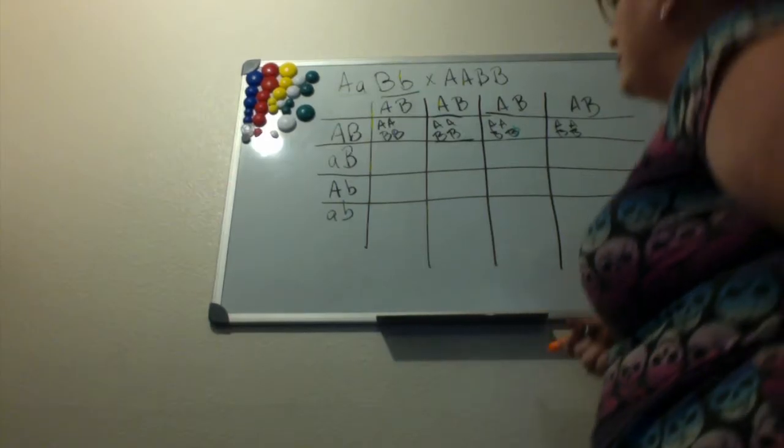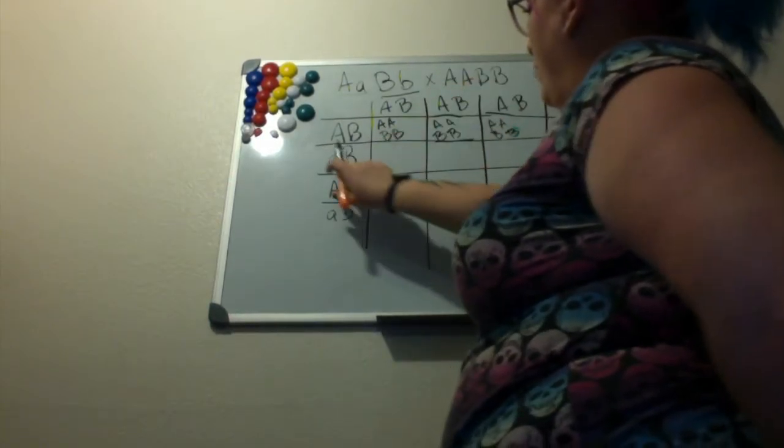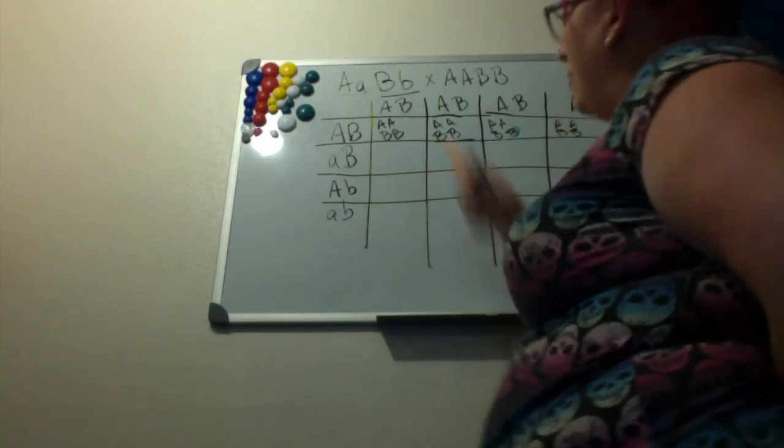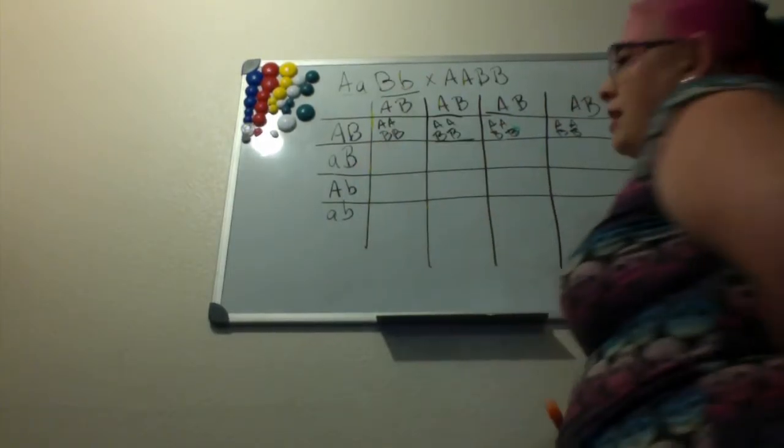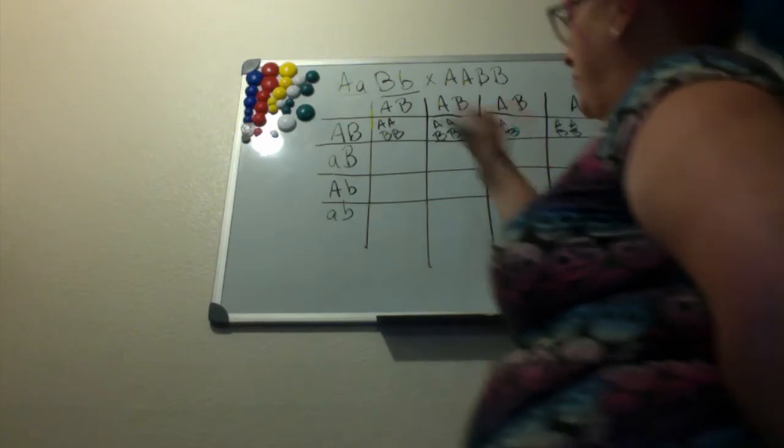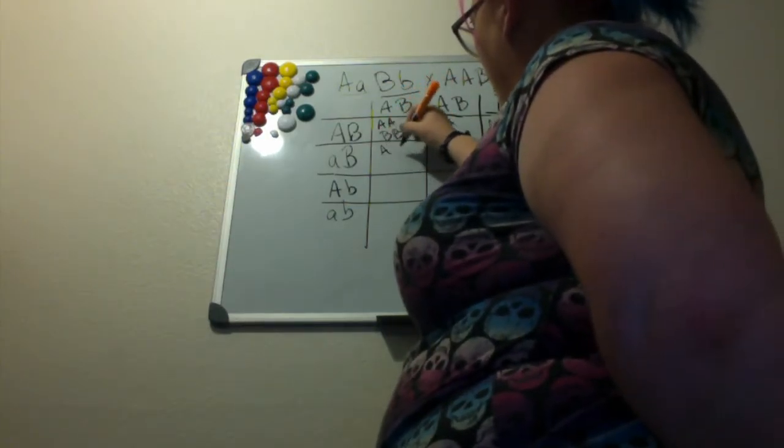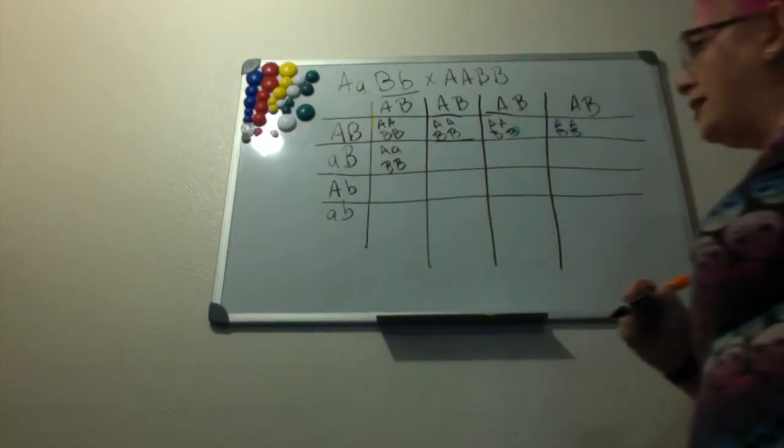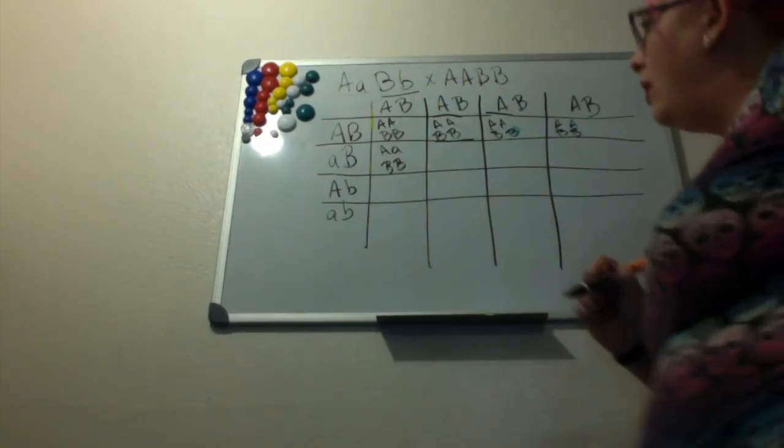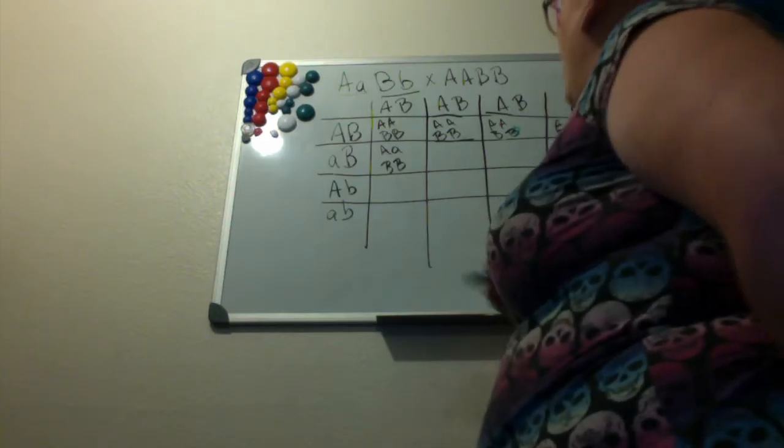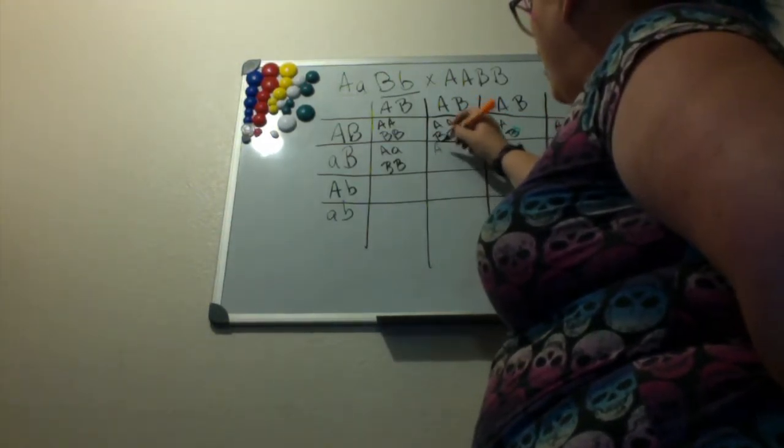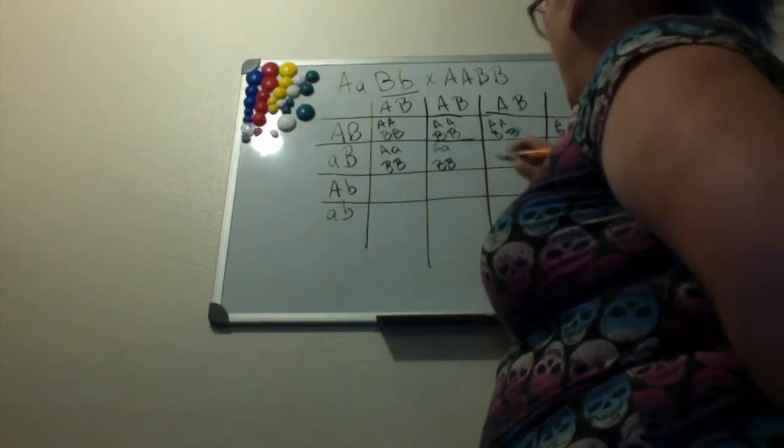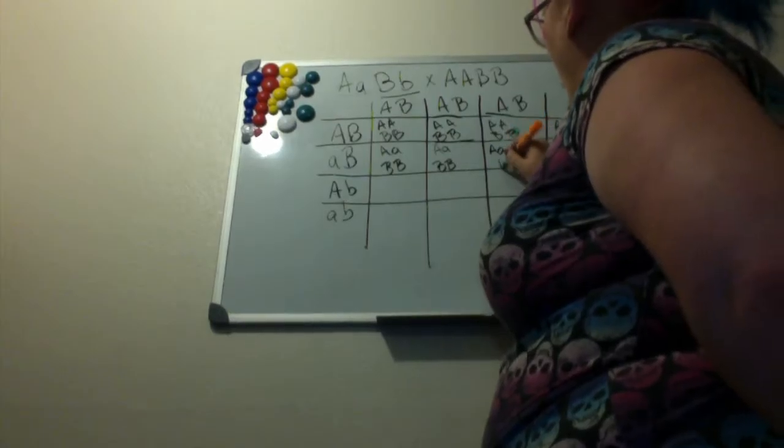Now in our second row we've got a recessive A and a dominant B paired with a dominant A and a dominant B. So we'll have dominant recessive and then homozygous dominant for the B gene. Same thing's going to happen here, it's going to be heterozygous for A and homozygous dominant for B, and it's going to be like that all the way across.